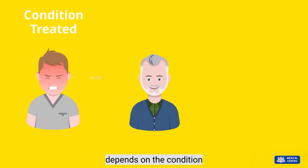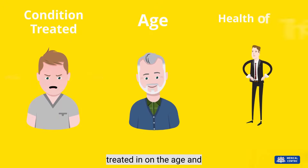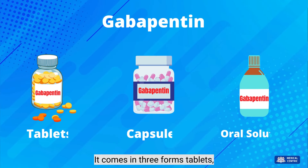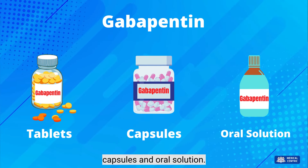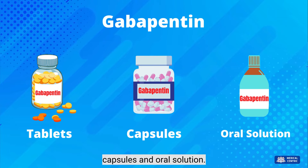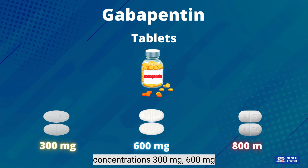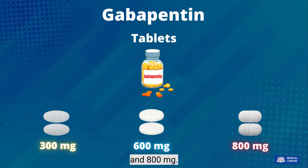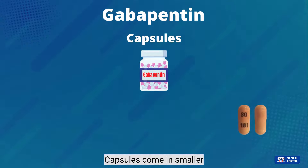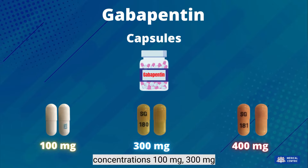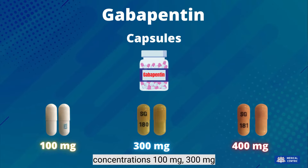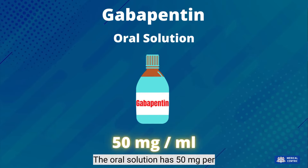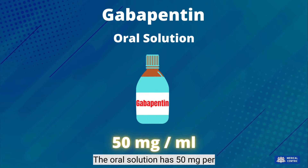The dosage for Gabapentin depends on the condition treated and on the age and health of the patient. It comes in three forms: tablets, capsules, and oral solution. The tablets come in three concentrations: 300 mg, 600 mg, and 800 mg. Capsules come in smaller concentrations: 100 mg, 300 mg, and 400 mg. The oral solution has 50 mg per ml.